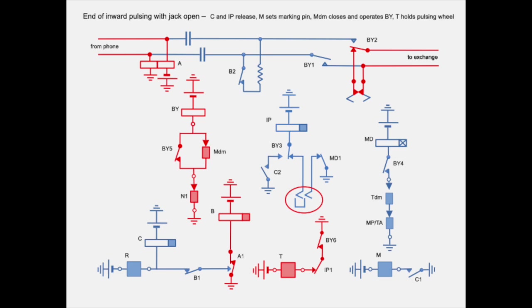Relay BY now operates. Contact BY2 closes the loop to the exchange for the interruptor contacts. But the interruptor does not operate yet because the pulsing wheel is held by magnet T. Transmission of pulses would otherwise start immediately if the jack plug was in place.